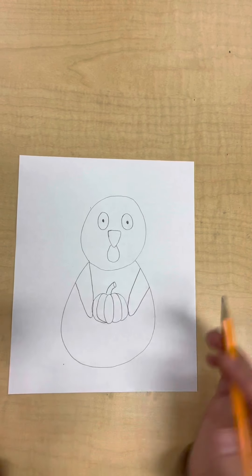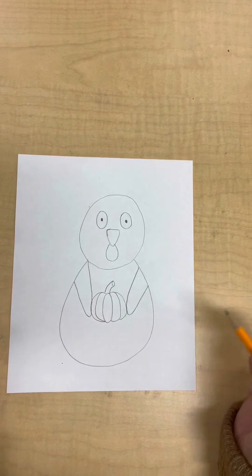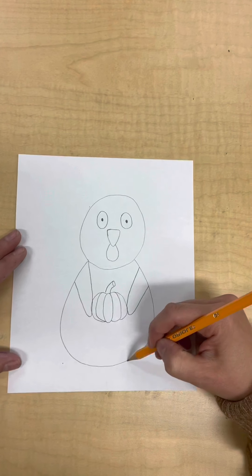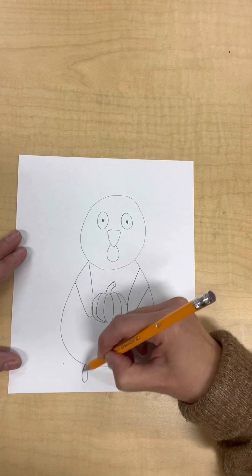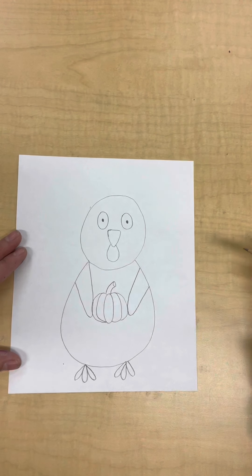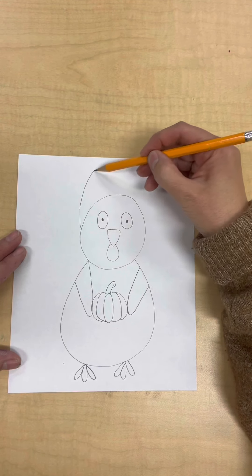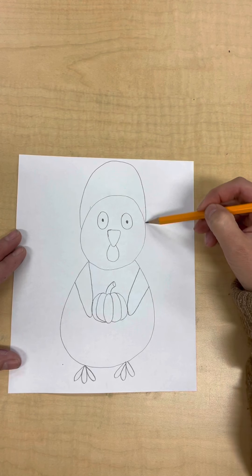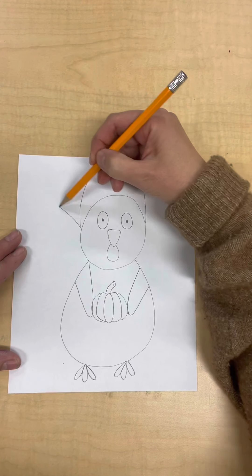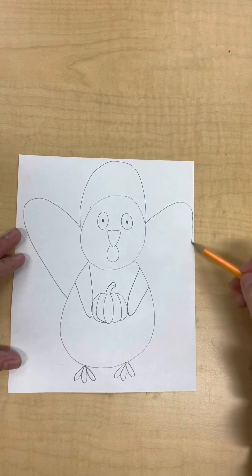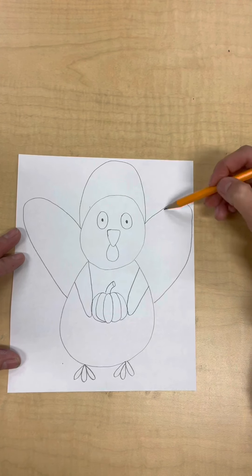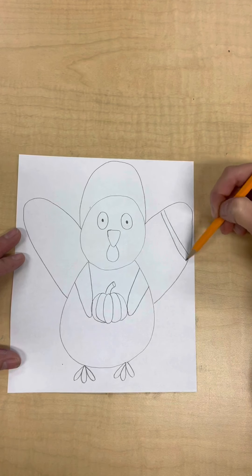And then his wings are going to be holding this pumpkin. So see how he's kind of got it like he's going to present it to whoever's at the dinner, and then we'll put his little feet on. And then he's got his turkey wings coming up like this behind him.